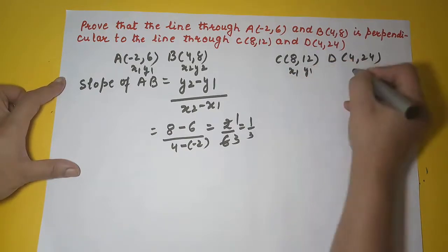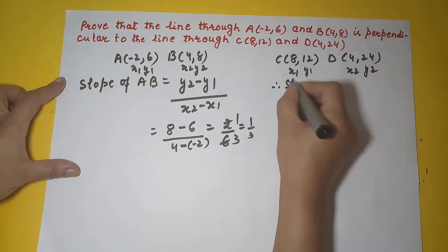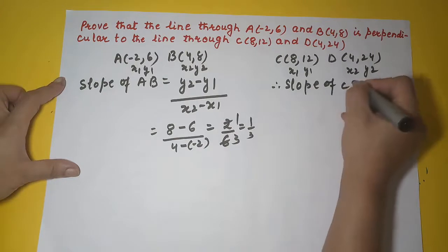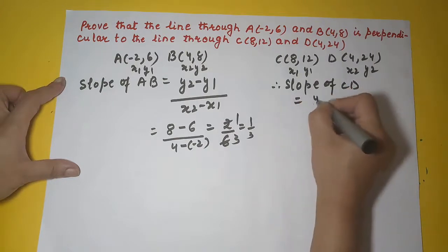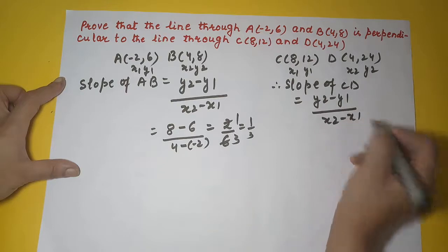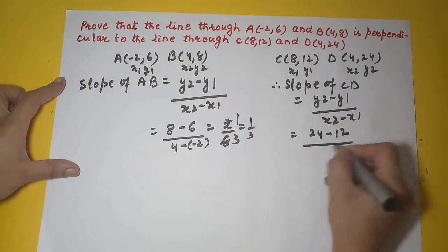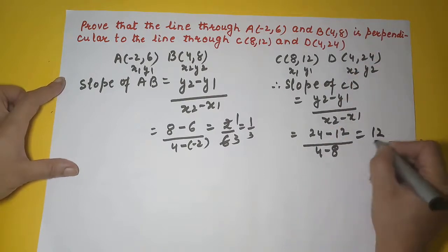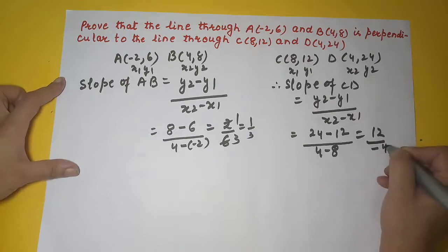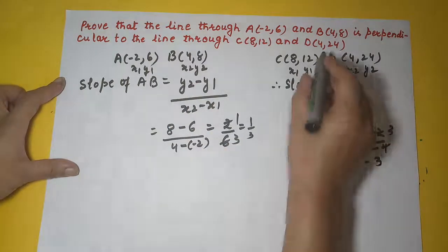Now let me calculate the slope of CD. For that this is x1, this is y1, this is x2, this is y2. Therefore slope of CD will be y2 minus y1 upon x2 minus x1. So y2 is 24 minus 12 upon x2 is 4 minus 8, which is 12 upon minus 4. So it is minus 3. So this is your slope of CD.